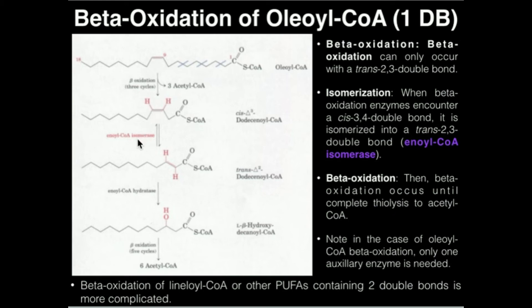So we have an auxiliary enzyme here referred to as enoyl-CoA isomerase. This will convert this 3-4 cis double bond into a 2-3 trans double bond. And this looks like the product of — if a normal saturated fatty acid reacted with the first beta-oxidation enzyme, we would get this trans double bond. This is an enoyl-CoA, and this can react through normal beta-oxidation for the remainder of its metabolism.